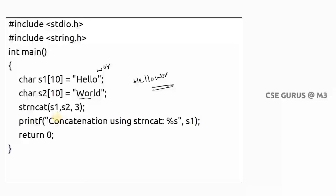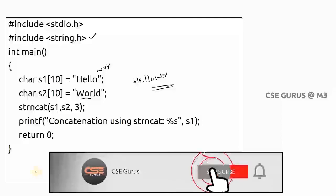So like this you have the basic string manipulation functions. There are many more string manipulation functions — you need to know the syntax and when to use each one. You must always write the header file which is #include <string.h>. We will see some programs using strings in the next two video lectures. Thank you.